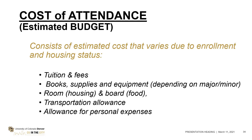Cost also differs based on housing situation. If you're living on campus with a meal plan, a single room versus a room with a roommate varies in cost. A meal plan for three meals a day, seven days a week, versus one without weekends if you go home every weekend — those choices affect the cost. Personal allowance also varies from person to person. Your estimated cost of attendance is the school's estimate; your actual budget depends on each person's circumstances.